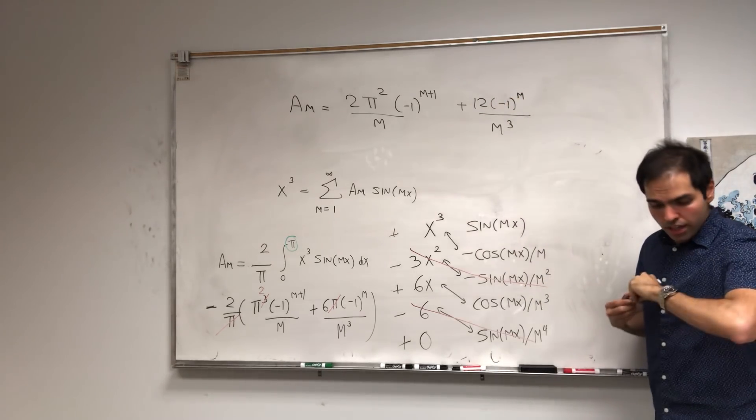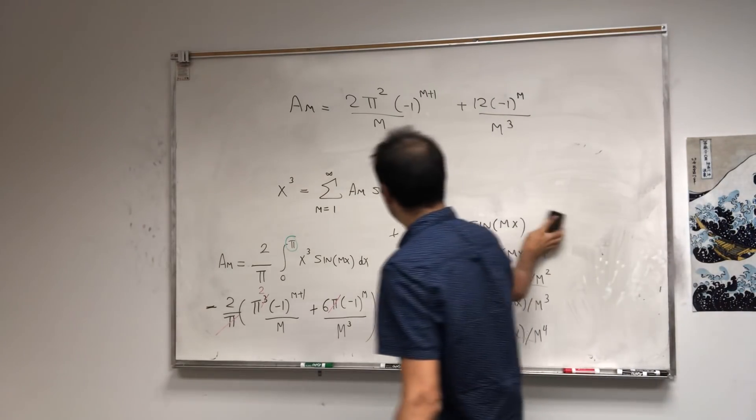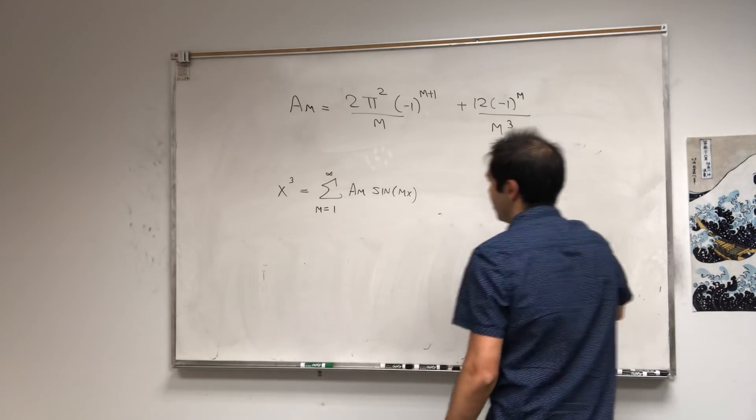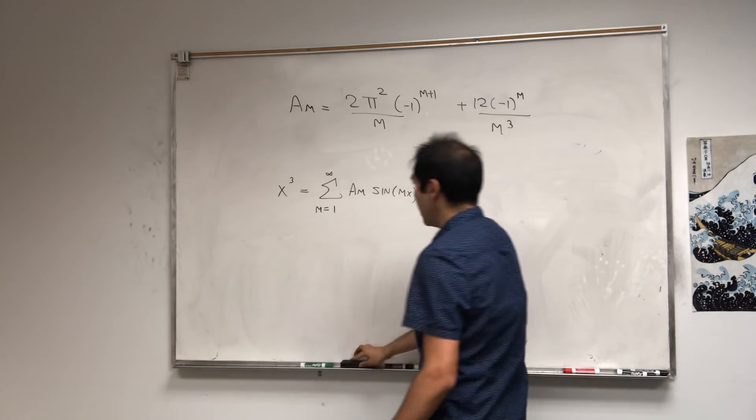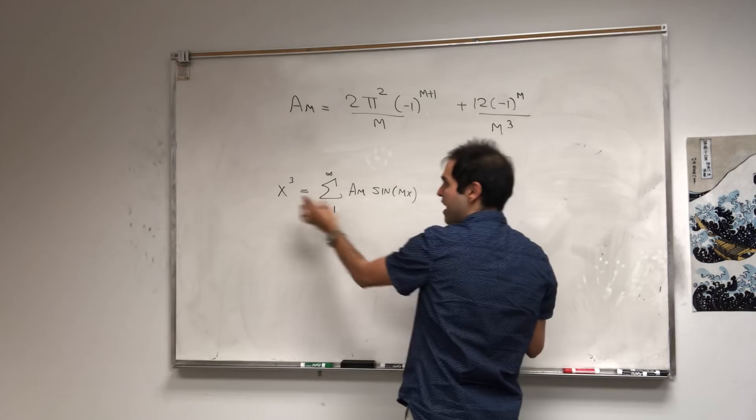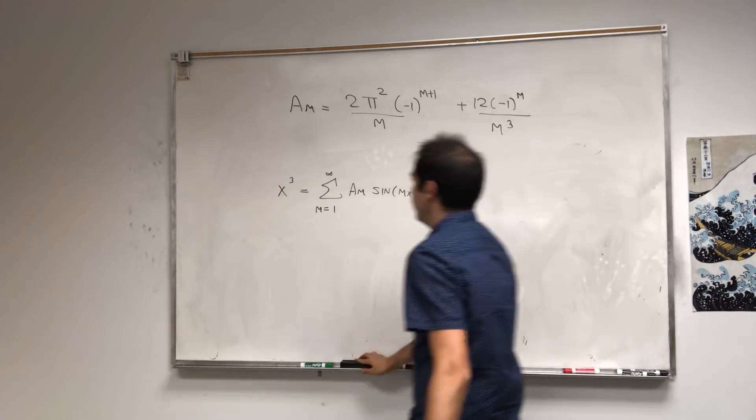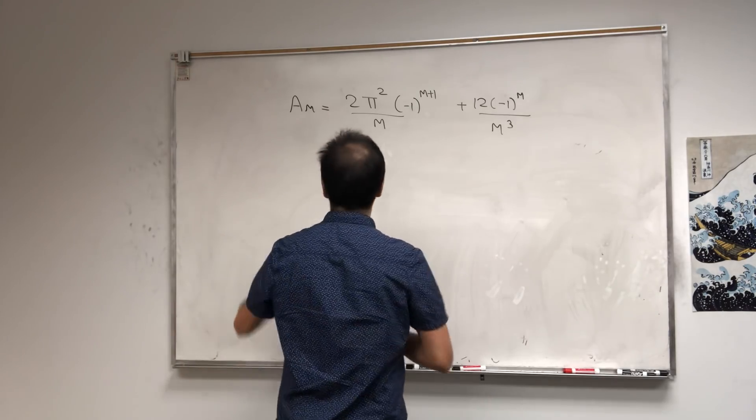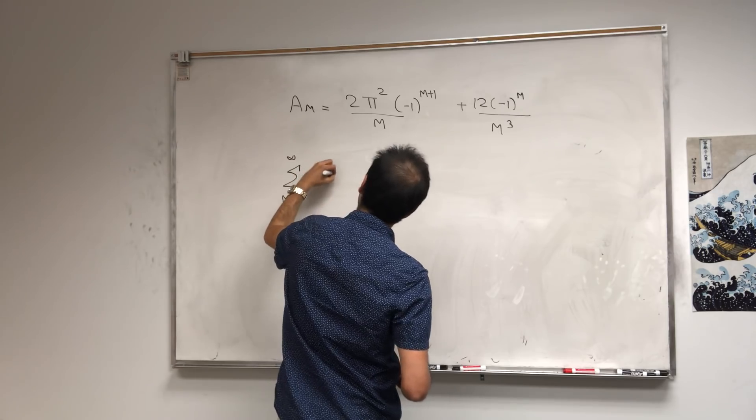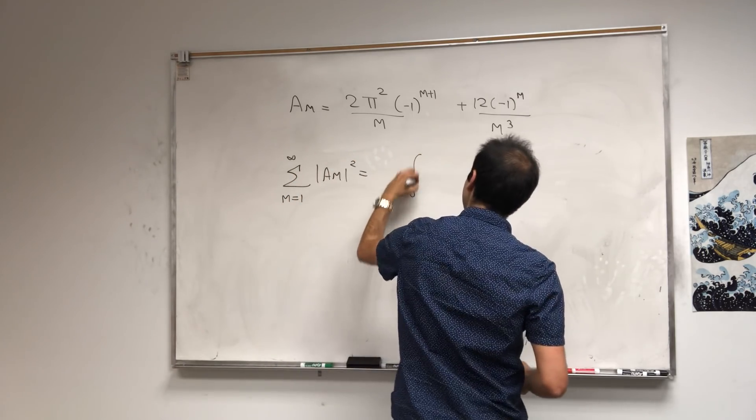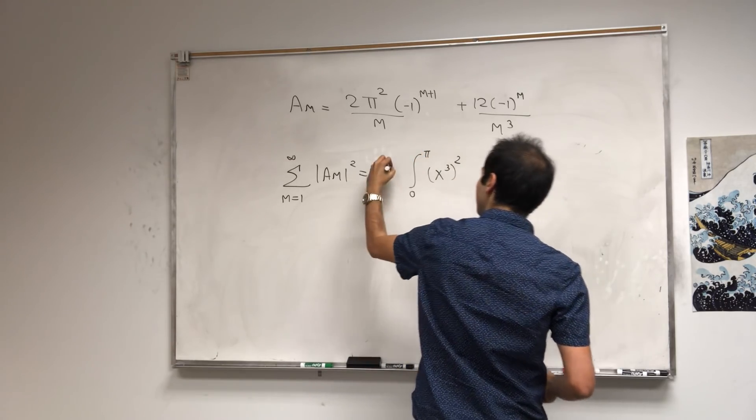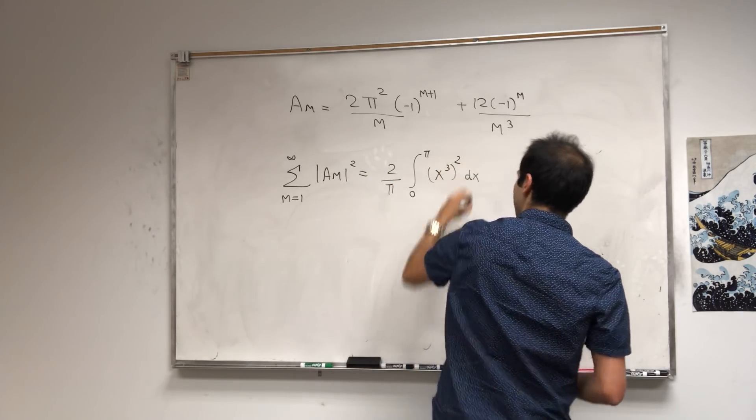Now, it's good we found a_m. Now we need to use Parseval's identity, which is some sort of a Pythagorean theorem, because it kind of says the sum of squares of a_m equals to a square of this, but in an integral fashion. So Parseval's identity now says sum from 1 to infinity of a_m squared equals integral from 0 to pi, the function squared, but with 2 over pi.